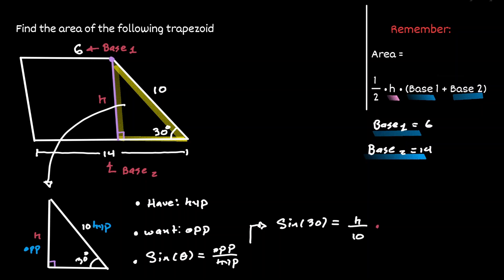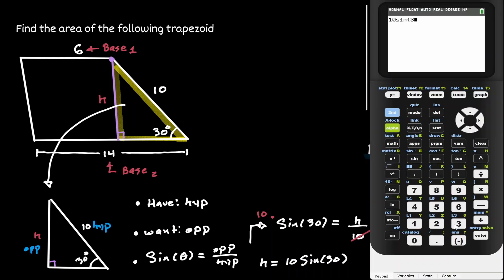If we multiply 10 to both sides we have an expression for the height: 10 times the sine of 30 degrees. Let's use a graphing calculator to find that value. So we can conclude that the height is 5.